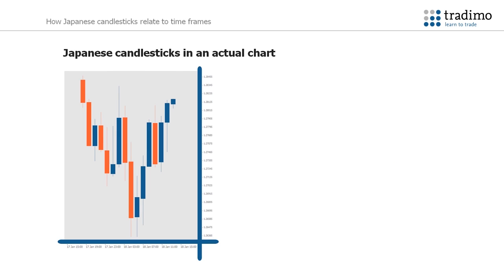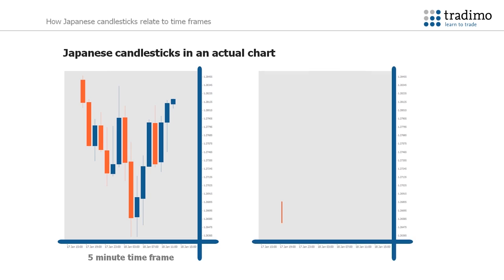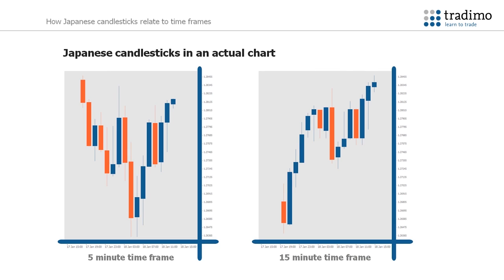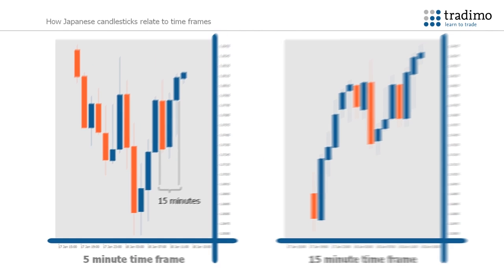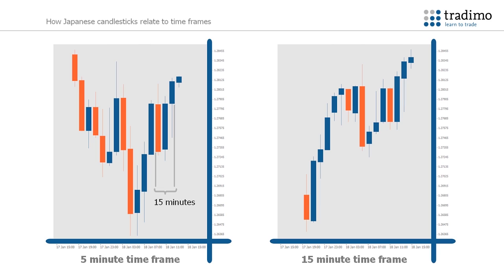Here you see how the candles look in a real chart. On the left you see a 5-minute time frame and on the right a 15-minute time frame. These two charts are showing the same price action at the same time. The three candles shown by the arrows on the left chart show this price action over three candles that form over 5 minutes each. The 15-minute chart on the right-hand side shows this exact same price action over just one candle that forms over 15 minutes. The 5-minute chart shows more detail than the 15-minute chart.